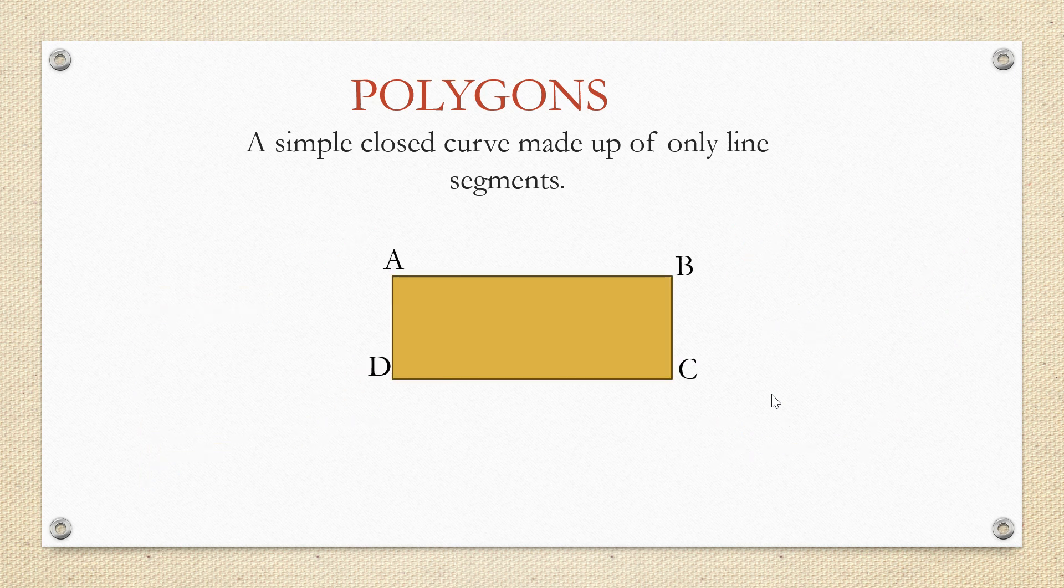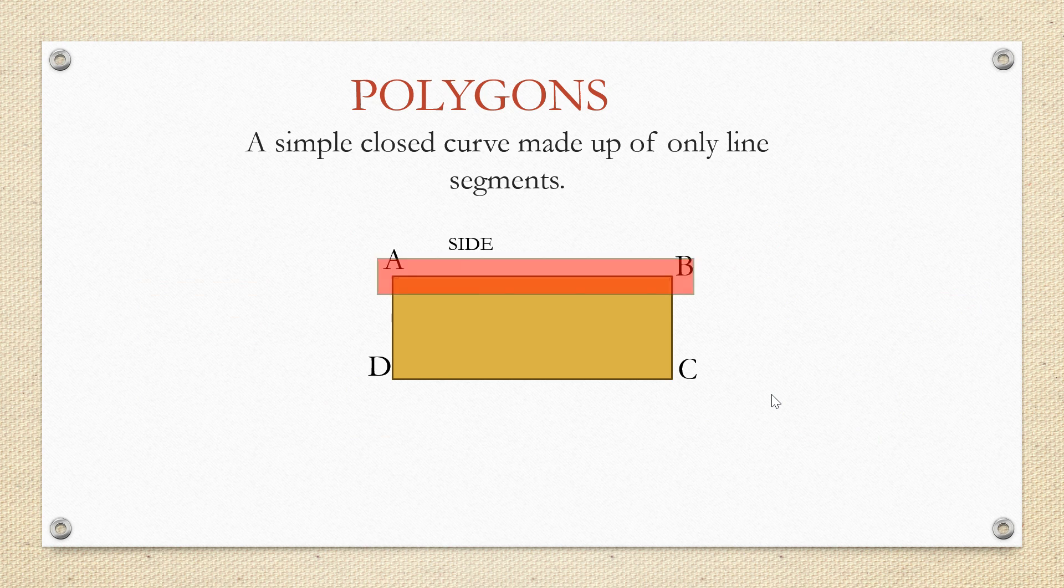Now in a polygon, if we look at this, these are formed using the line segments. And the line segments that are forming a polygon are called sides of it. And the points where two sides intersect are called vertices of that particular polygon.